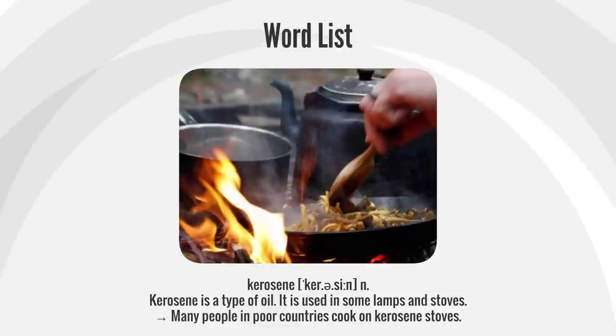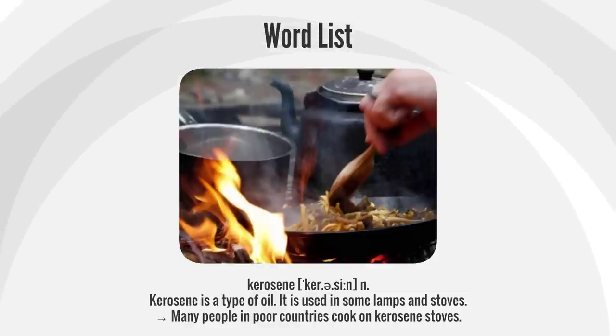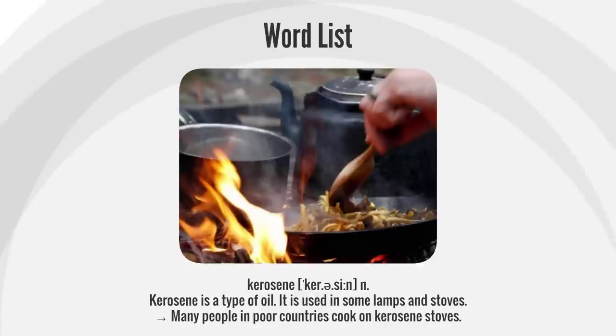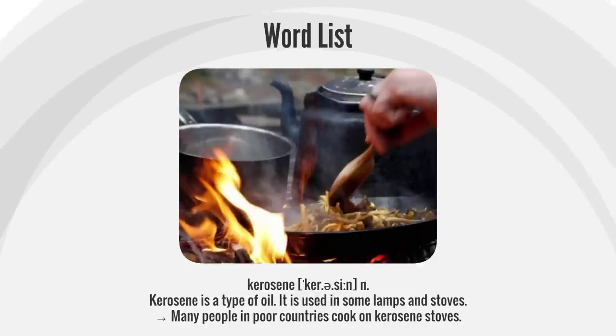Kerosene. Kerosene is a type of oil. It is used in some lamps and stoves. Many people in poor countries cook on kerosene stoves.